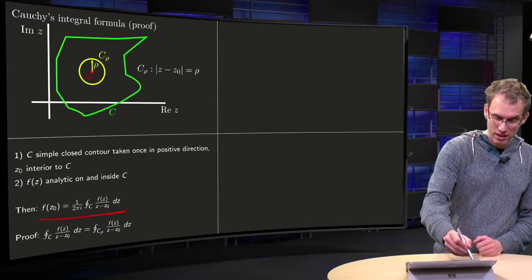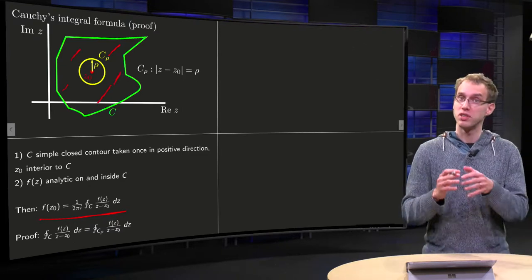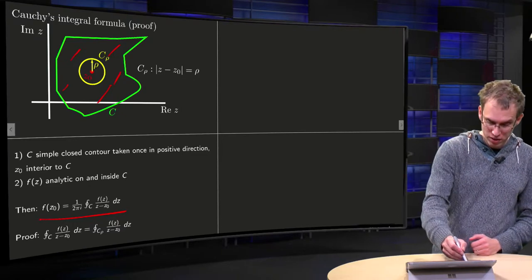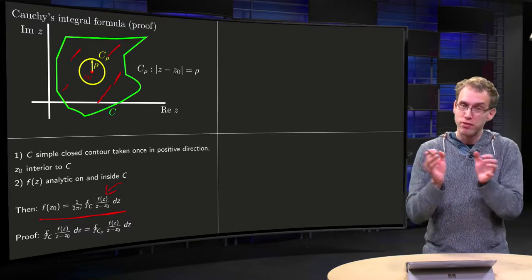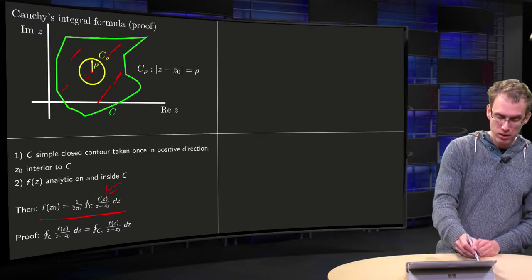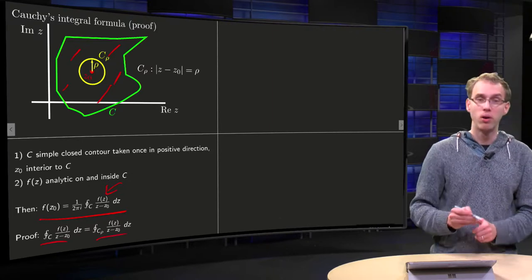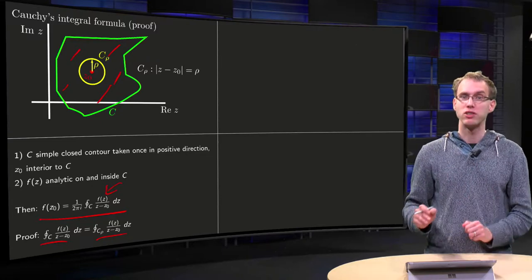Well, f of z is analytic here in between C_rho and C, because it's analytic everywhere. Our function f of z over z minus z0 is only not analytic at z0. So we can deform our contour, and the integral along C of f(z) over z minus z0 equals the integral along C_rho. So that's the first step.